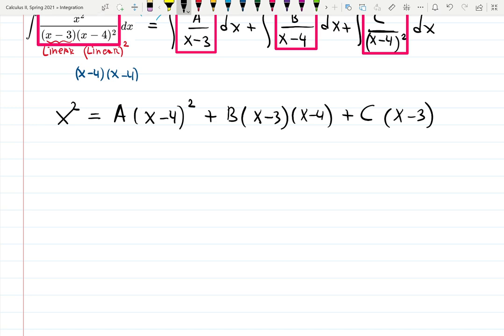Let's just guess nice numbers. For example, I want to plug 4 because I can see it in several places. x equals 4 gives me 16 equals C times 1. That gives me C right away. C is 16. Put it in the box.